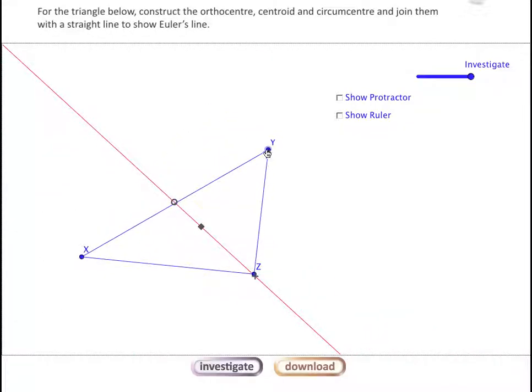There's a couple of other things that could be explored here. We could investigate what's happening when we've got a point on a side and a point on a vertex. Is there anything special about that triangle?